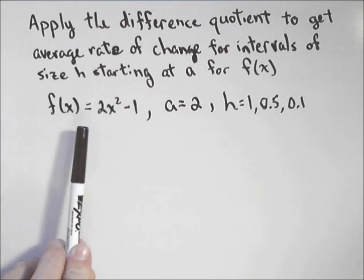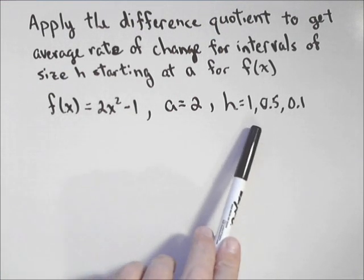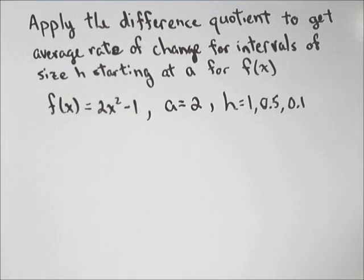So we're going to do ours for f of x equals 2x squared minus 1. We'll have our interval start at 2, and we'll just do it for three h values. I think you'll kind of see the pattern after that.